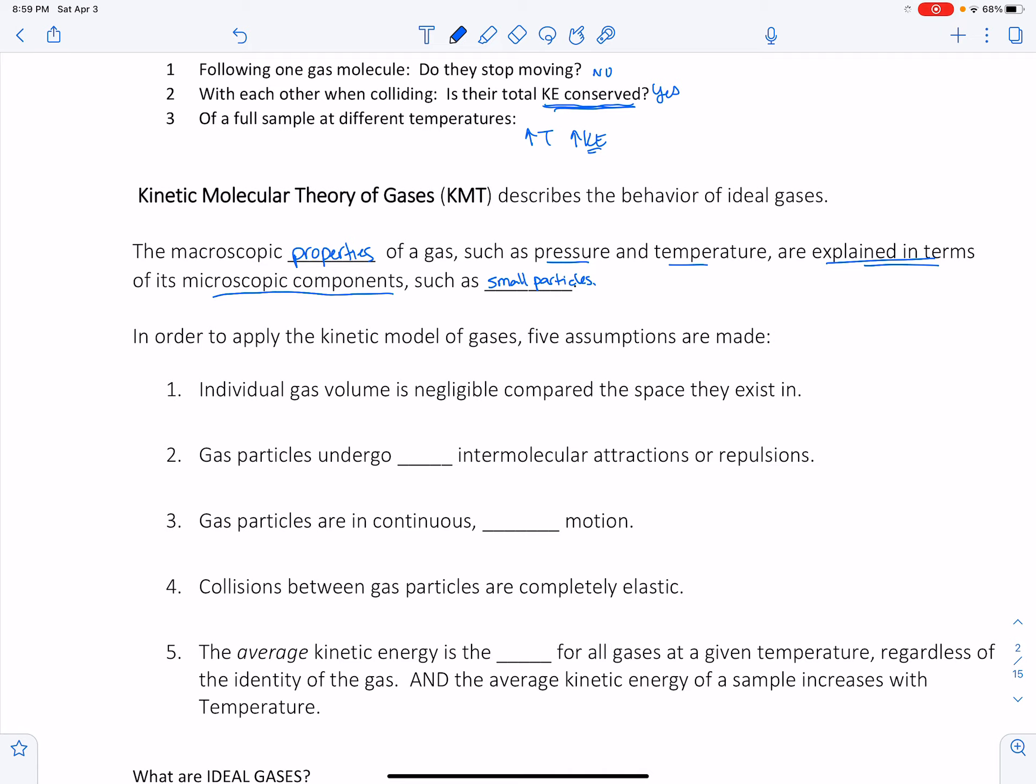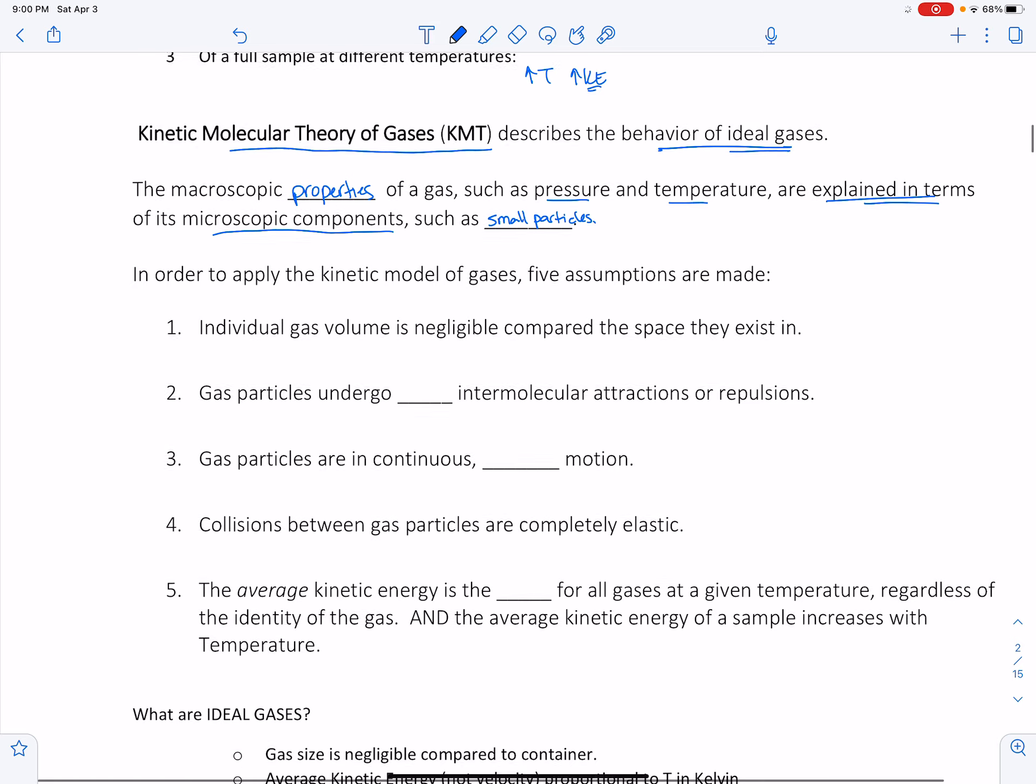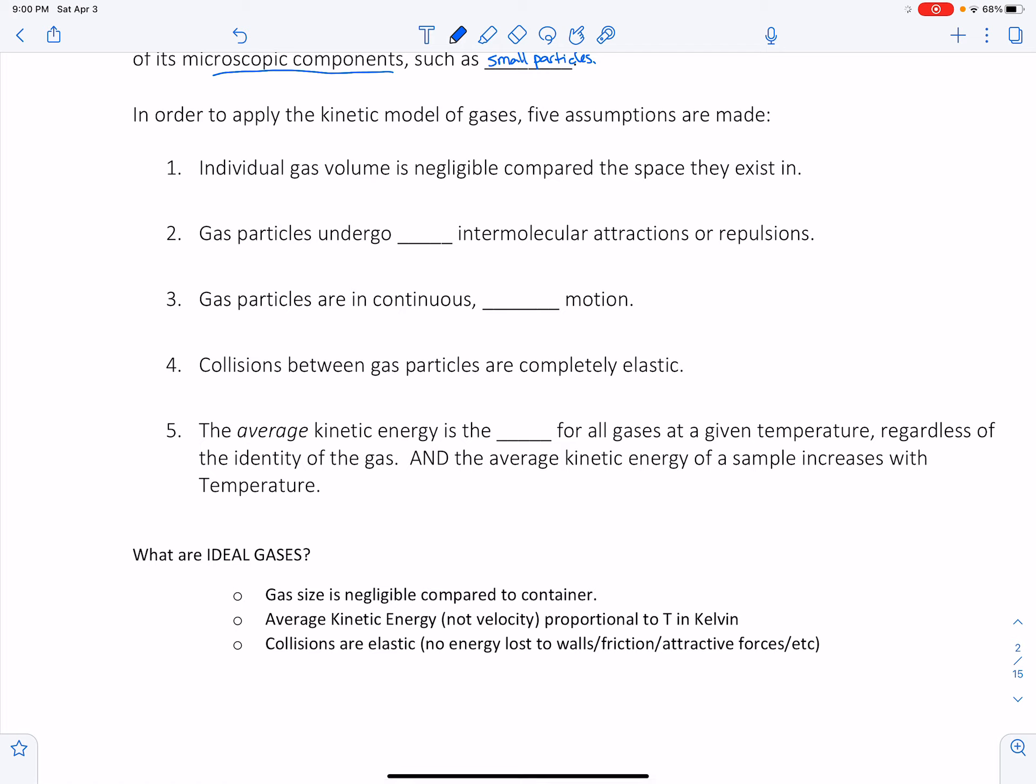So this thing is called the Kinetic Molecular Theory of Gases, and this helps us describe ideal gases. More on ideal gases coming up. But in order to apply the kinetic model of gases, we have these assumptions. One is that individual gas volume is negligible. This means if you are in a stadium and the stadium is sealed, it's a covered sealed stadium, and you have a little tiny fly in the stadium, compared to the size of the stadium the fly's volume is negligible. Or imagine even smaller, like a little teeny tiny piece of sand. That's what this means. The gas, each individual gas volume is negligible compared to the size of the container that it's in.